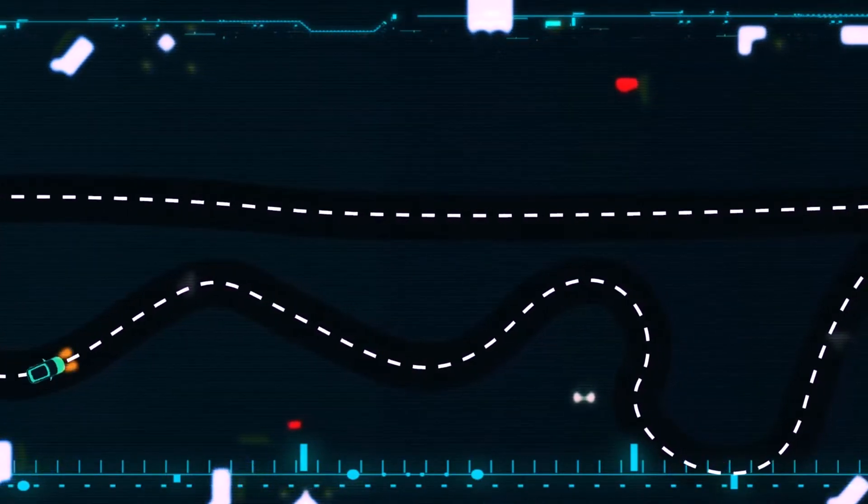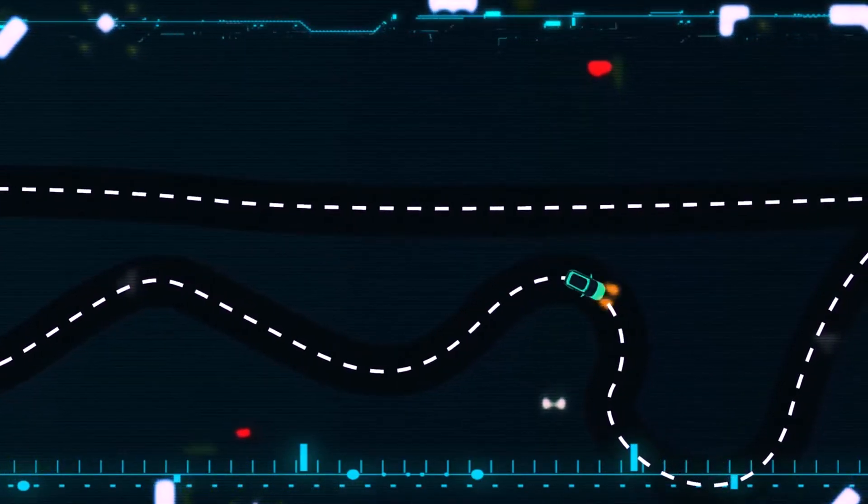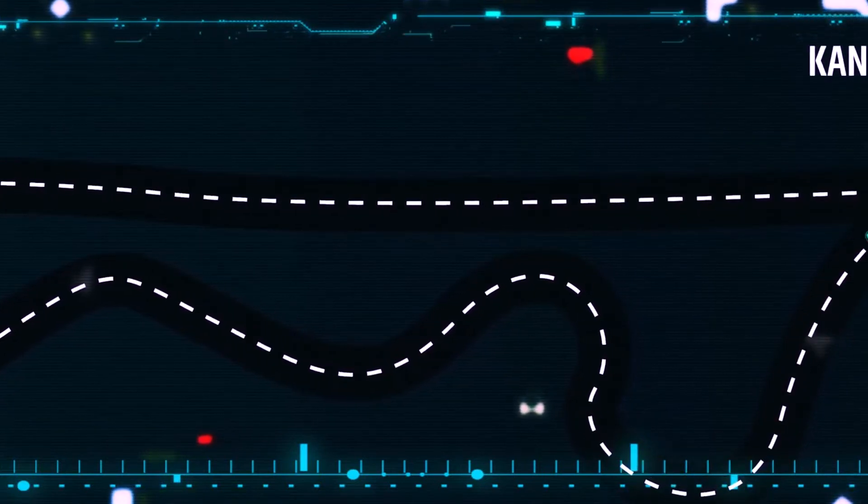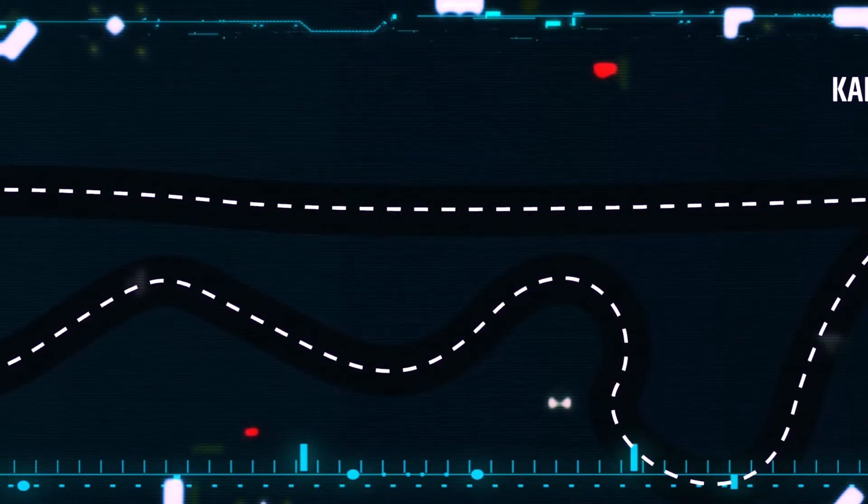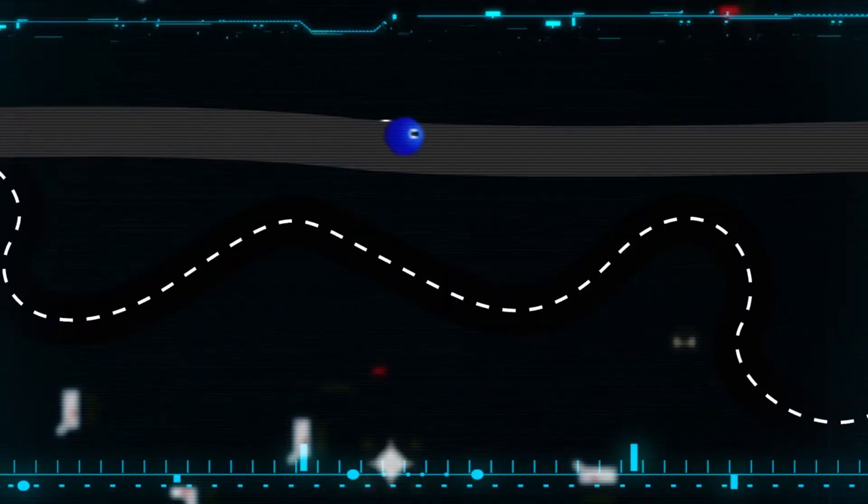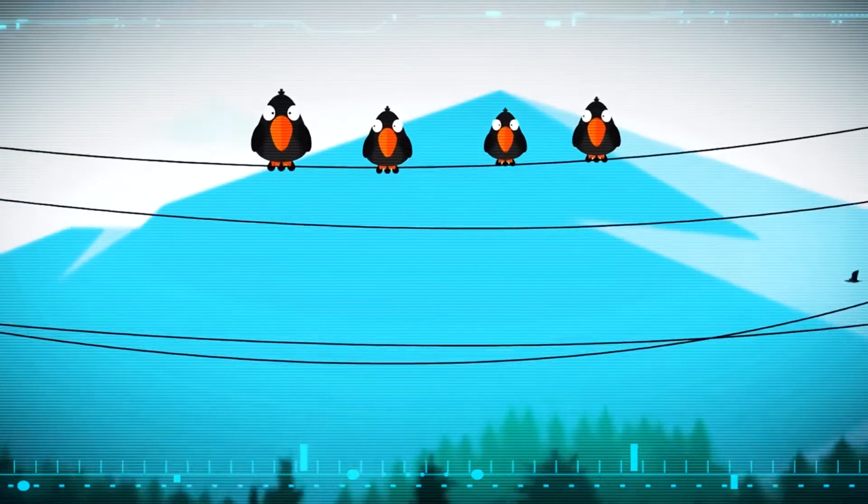Imagine you have to go somewhere and you need to get there fast. What way would you choose? Would you choose the path with more traffic or less? Less, right? In the same way, electrons also take the path with less traffic, meaning less resistance in terms of electricity.